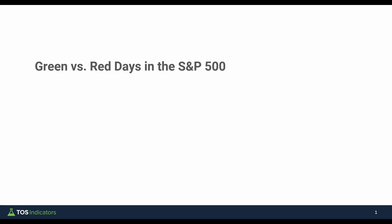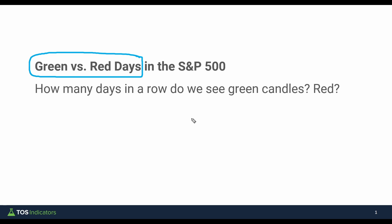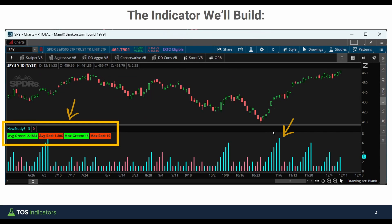In today's ThinkScript tutorial, we're going to be building a very simple indicator which lets us gauge how many green days versus red days we have in the S&P 500. More specifically, we're going to be looking at how many green days in a row versus how many red days in a row. The idea here is to help us build a better profile of what tends to happen in the S&P 500, so we know where trends might be exhausting.